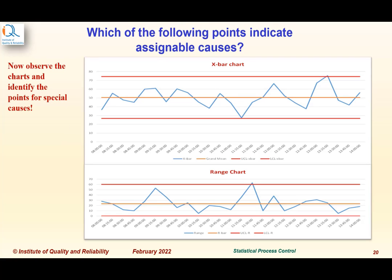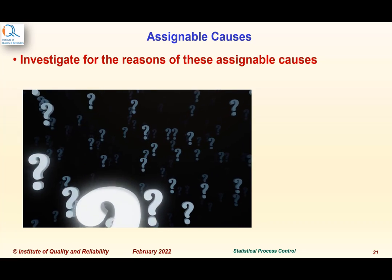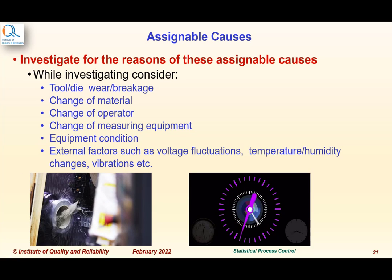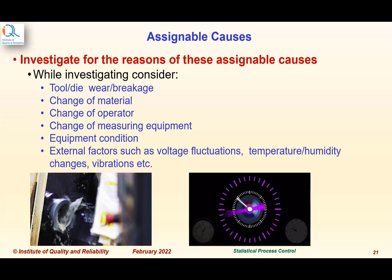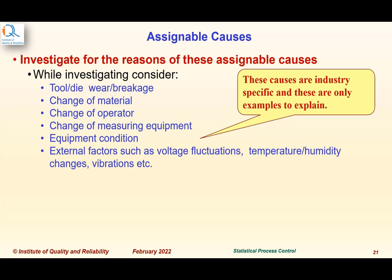Now observe the charts and identify points for special causes — it is fairly straightforward in this case. On the range chart, the point at 11:30 AM is above the upper control limit. On the X-bar chart, the point at 13:15 is also above the upper control limit. Once such points are identified, we must investigate for assignable causes, considering tool wear, tool breakages, change of materials, change of operators, change of measuring equipment, equipment condition, and external factors such as voltage fluctuations, temperature, humidity changes, and vibrations. These are industry-specific examples.